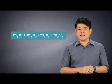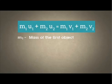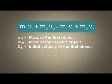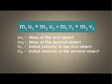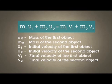For all three types of collision, you can use the same basic formula: M1U1 plus M2U2 equals M1V1 plus M2V2. Where M1 is the mass of the first object and M2 is the mass of the second object. U1 is the initial velocity of the first object and U2 is the initial velocity of the second object. V1 will be the final velocity of the first object and V2 will be the final velocity of the second object.